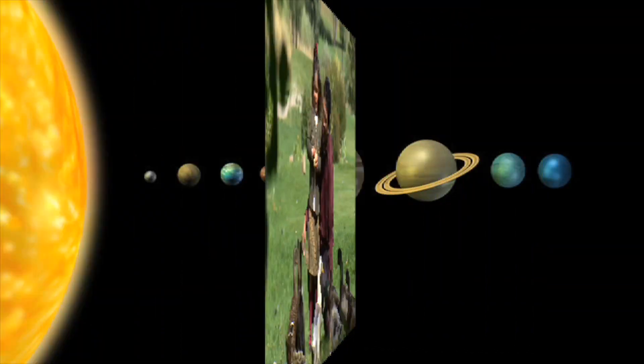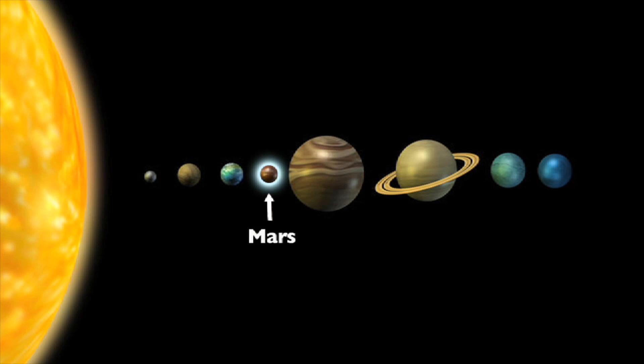Mars is the fourth planet from the sun. Mars is often called the red planet, because its surface is covered with rust-like dust.